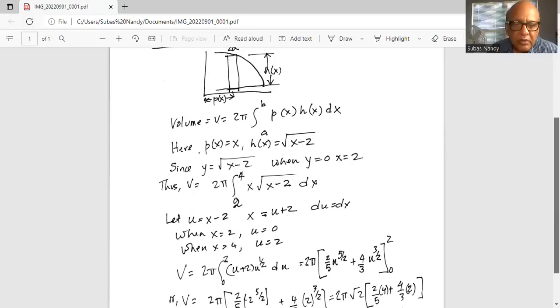So 2 pi then we do the integration. So you multiply u to the power of half with u plus 2 which is u to the power of 3 by 2 plus 2 u to the power of half. The integration of u to the power of 3 by 2 is u to the 5 by 2, in the denominator is 5 by 2 which when inverted becomes 2 by 5.